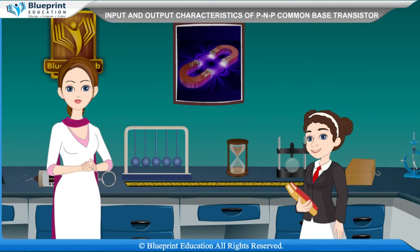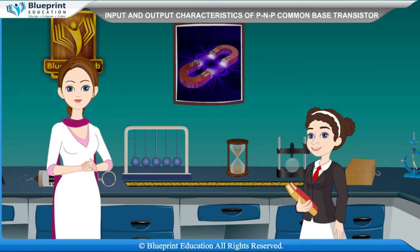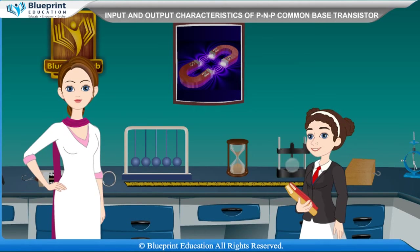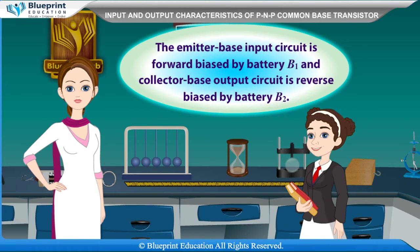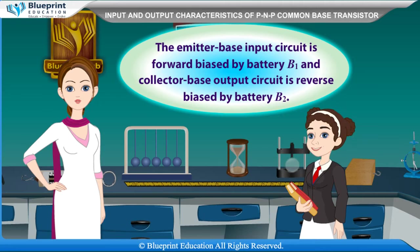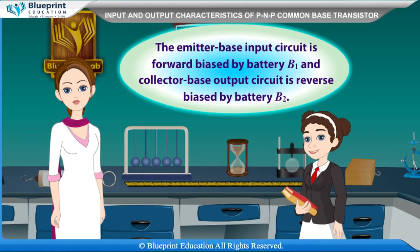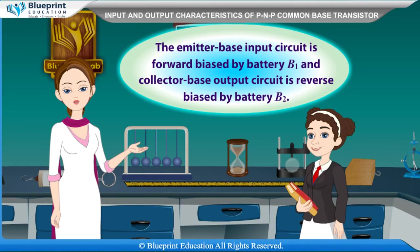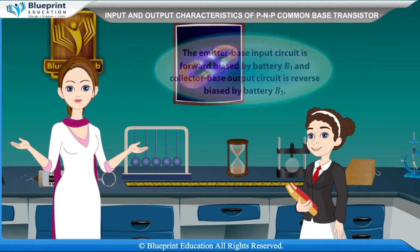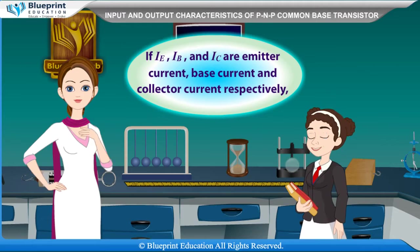In common base configuration, the base is common to both the input and output circuit. The emitter-base input circuit is forward biased by battery B1, and the collector-base output circuit is reverse biased by battery B2.